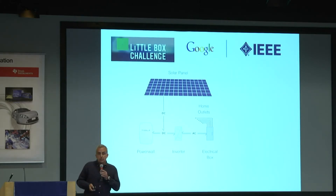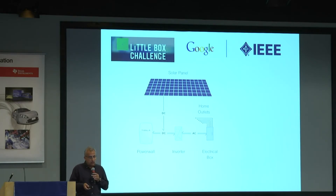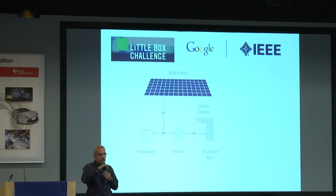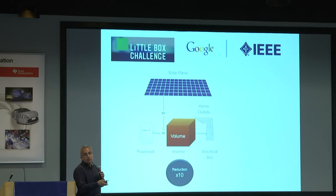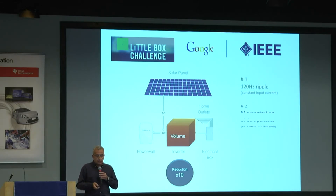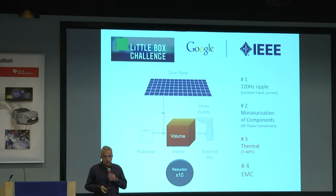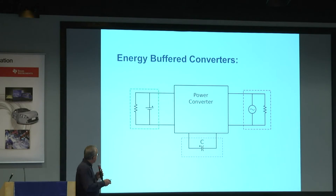This was the Google Little Box Challenge. It is a single-phase inverter with no isolation, in which the input voltage is 400 volts and the input current must be very constant. The input power is constant, the output power is pulsating, and the key to winning the competition was volume. They expected a reduction of 10 times compared to typical commercial products, and they identified four technical challenges. Basically it is an energy buffer converter.